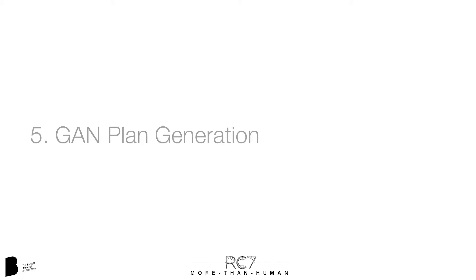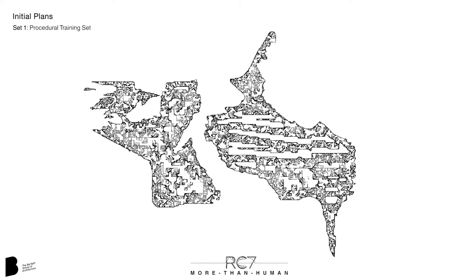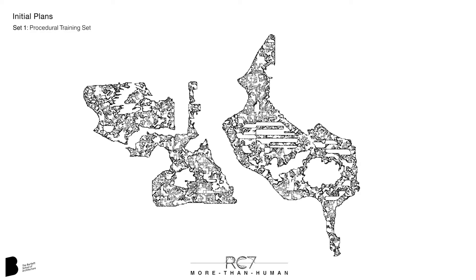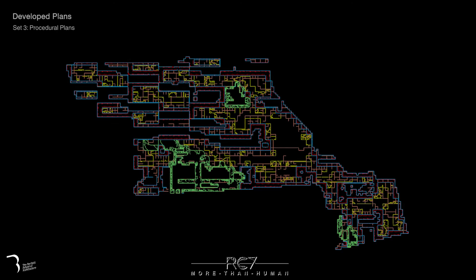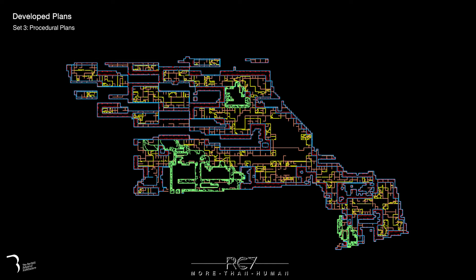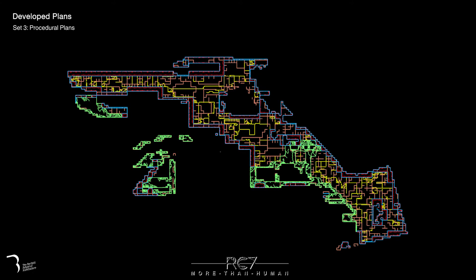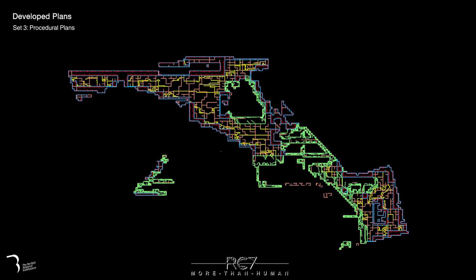In order to develop the design beyond a massing model, our second series of GAN experiments explored the generation of plans. By sectioning the massing we can create a series of floor plates that can be used to train the GAN. Our developed plans add more environmental consideration, mapping the sunlight reaching the floor plate, allowing areas that receive direct sunlight to become predominantly non-human.